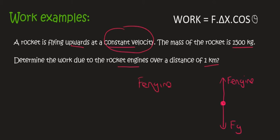So we can say that F engine is equal to Fg, and F engine is then going to be equal to Fg, which is mass times gravity, which is equal to 1,500 times by 9.8. Let's assume that we're still close to the Earth's atmosphere, so we'll use 9.8. And that's going to give us 14,700 Newtons.